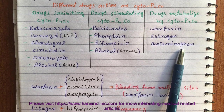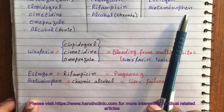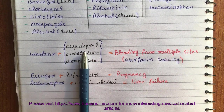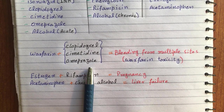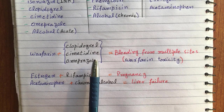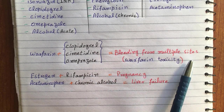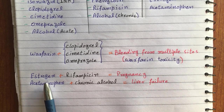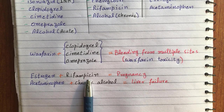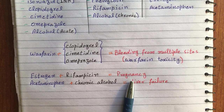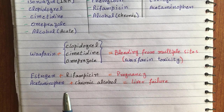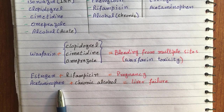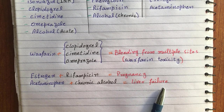A very important thing to know is: if we are giving a patient warfarin with clopidogrel, cimetidine, and omeprazole, then the result may be bleeding from multiple sites due to warfarin toxicity. If we are giving a lady estrogen plus rifampicin, then the result will be pregnancy. And if we are giving a chronic alcoholic patient acetaminophen, then the result may be liver failure.